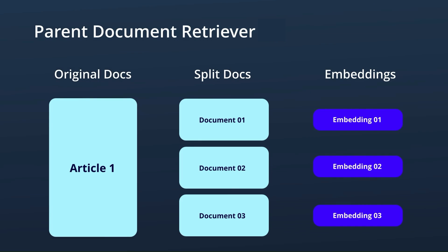That said, often we want to make use of the fact that the large language model can actually handle multiple things in there, because it might want to do a comparison — to say that this particular product earned more in comparison to product A and product B. To do that, we'd want a specific embedding for the chunk that we want, but then we want to pass in a bigger chunk of the overall context.